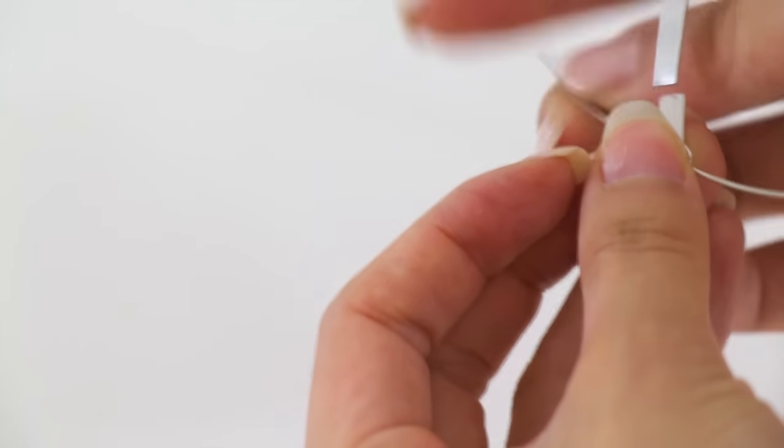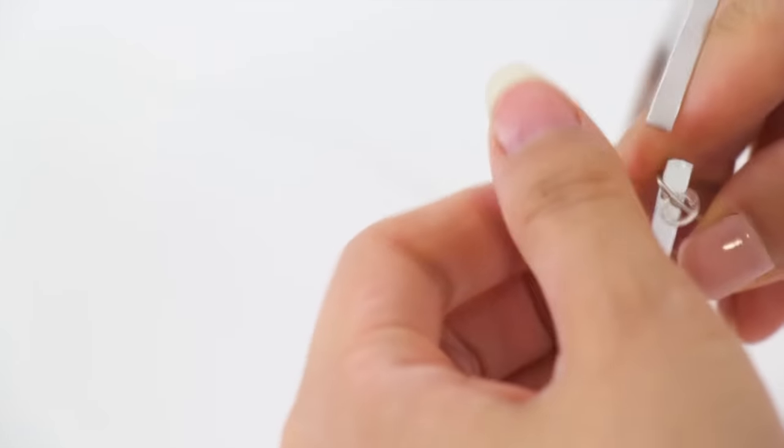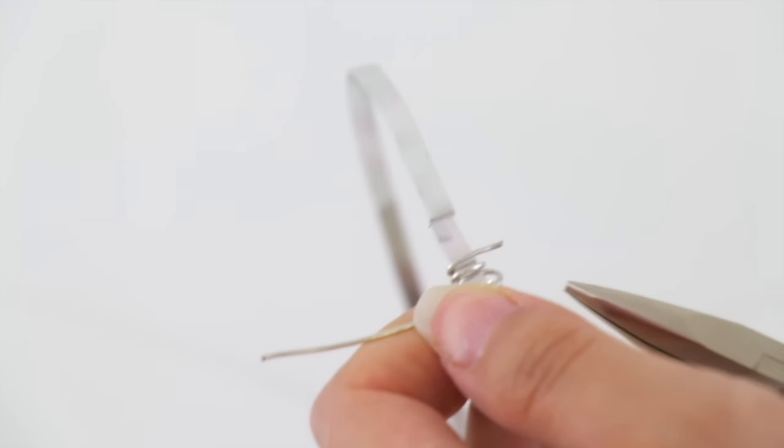Now take a piece of thin wire a couple inches long, and thread it through a jump ring. What you're going to do with it is just wrap it around the ends of the frame.